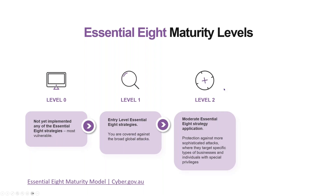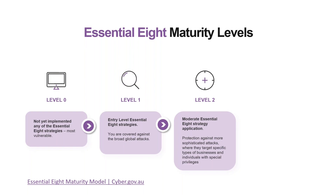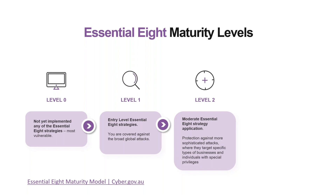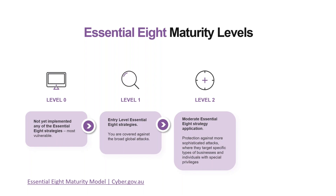Level two is where you're protecting against more sophisticated attacks where you're effectively the target of someone looking at a specific type of business or individuals that have specific privileges. This is relatively targeted at maybe an industry type or a role type within an organization.